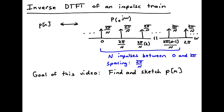Hello and welcome to another DSP video. In this video we'll solve for the inverse discrete time Fourier transform of an impulse train. Specifically, we're looking at a signal p(n) that has the Fourier transform shown here — a series of impulses with N impulses between 0 and 2π, with spacing 2π/N. Since this is a DTFT, it is periodic with period 2π, so it repeats outside the intervals shown. The goal of this video is to find and sketch p(n).